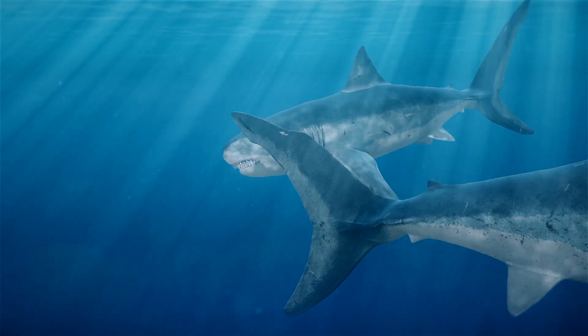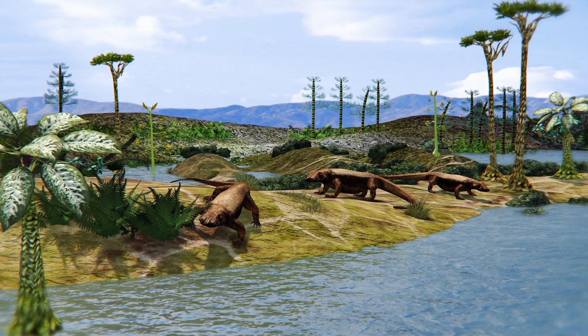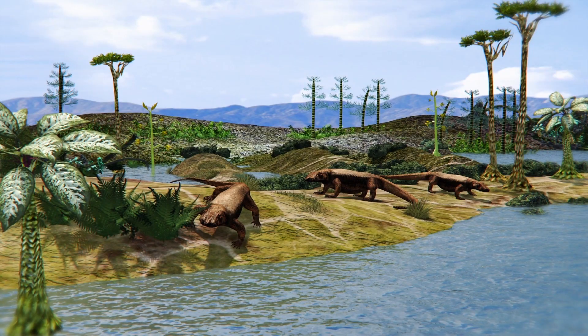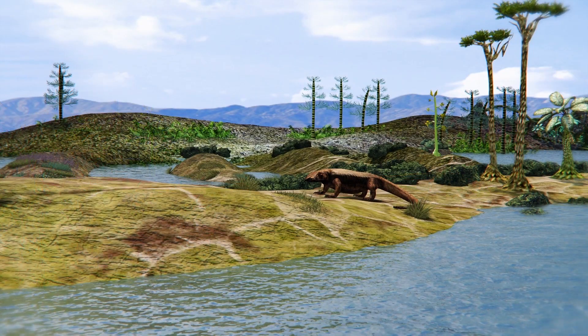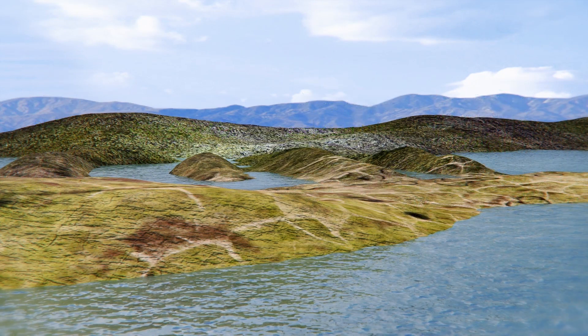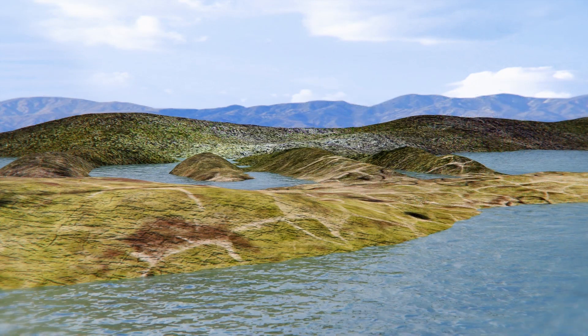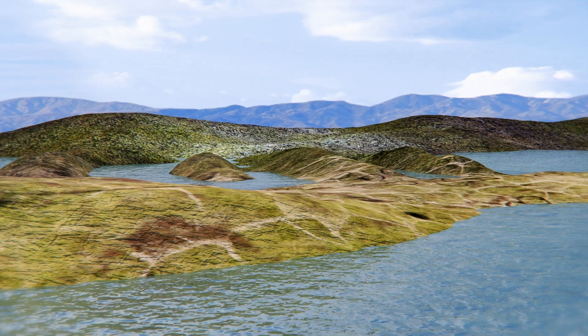Importantly, the second-wave extinction wiped out the first four-limbed fish that had ventured onto land. This means another group of tetrapods became the precursors of land animals.